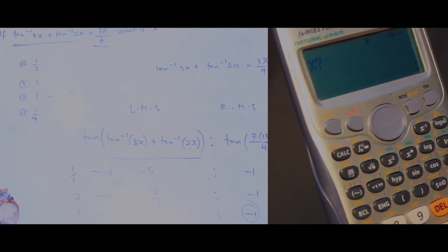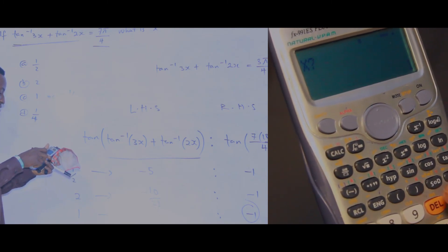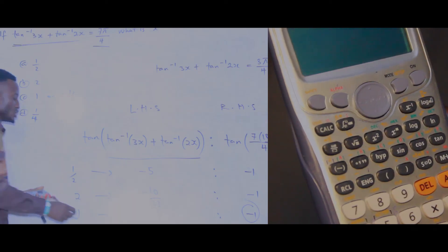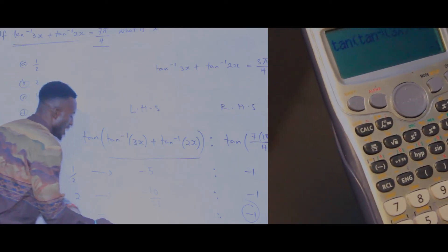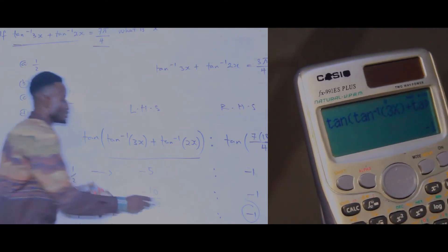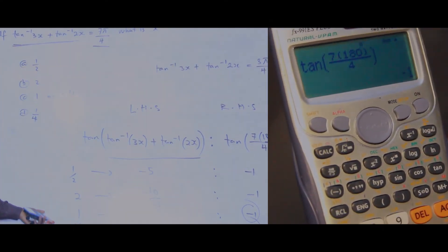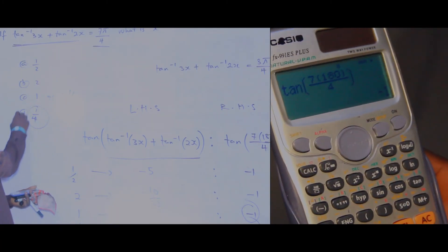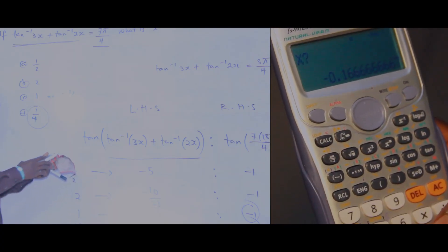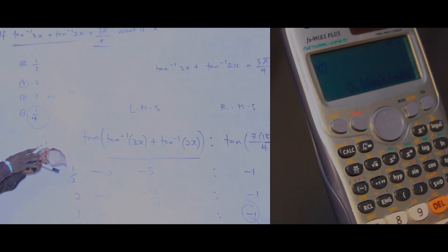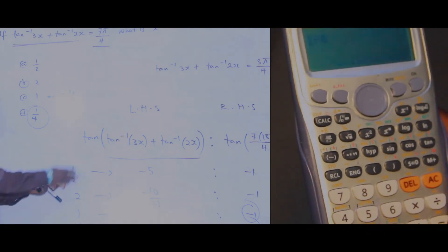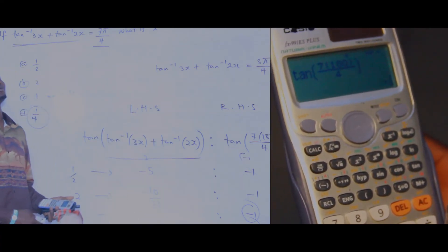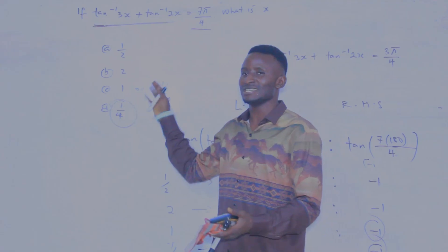Press calculate again to test the second option, which is minus one over six. Press minus 1 divided by 6, then press equals. You observe that when you use minus one over six, the left side is also minus 1. Press equals again — the right side is also minus 1. That is the same thing! So the left side equals the right side. If you use option D — press calculate, press 1 divided by 4 — the left side equals 2 but the right side is minus 2. They can never be equal.